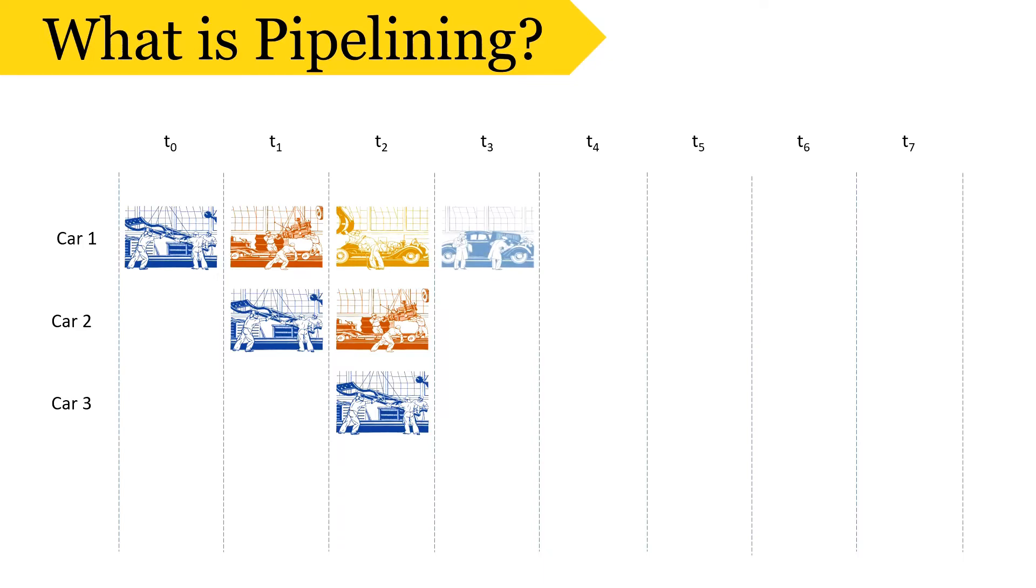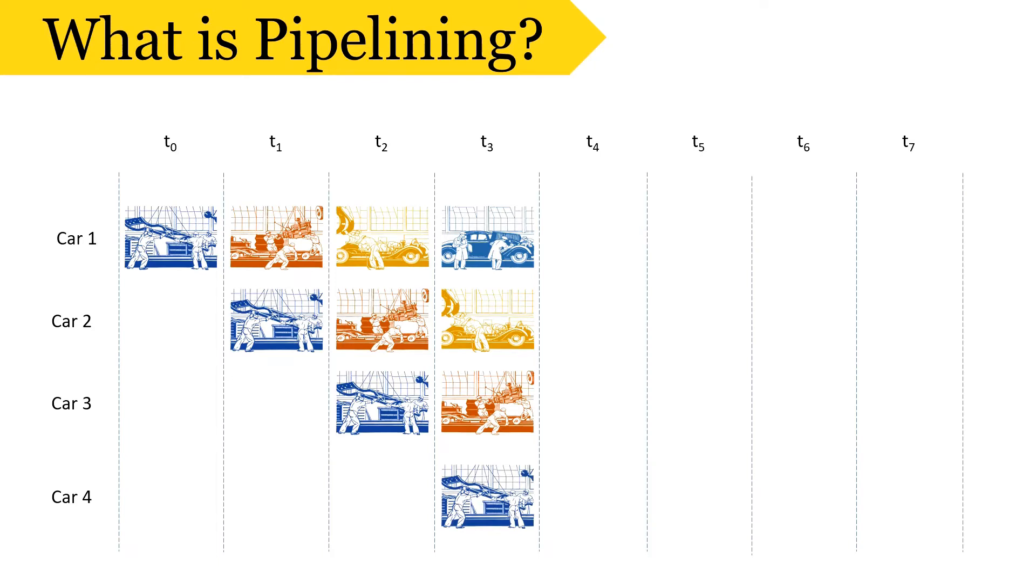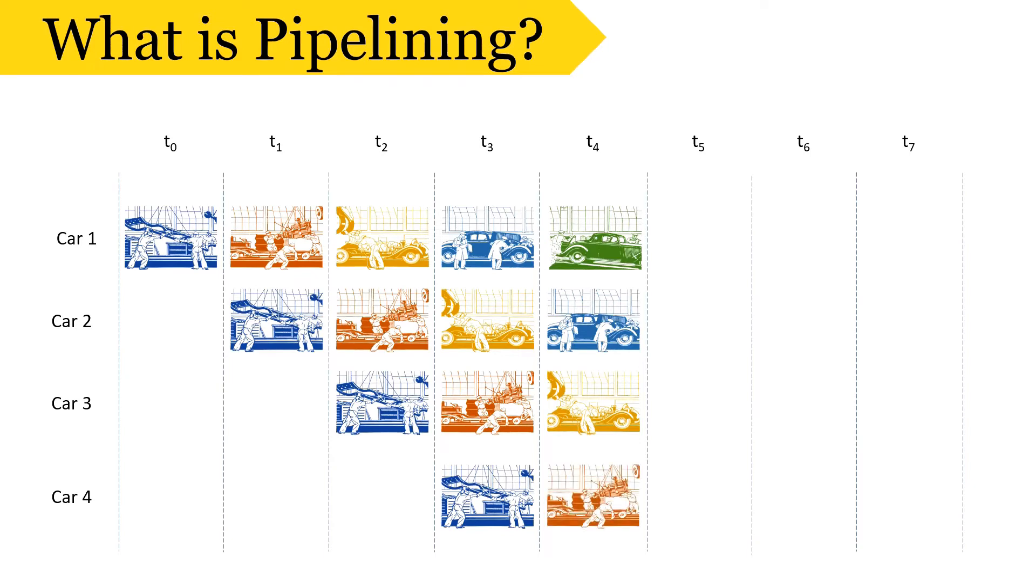At time T3, group 4 will paint the body of car 1, group 3 will add body to chassis of car 2, group 2 will add engine to chassis of car 3 and group 1 will prepare chassis of car 4. At time T4, group 5 will perform final checkup of car 1, group 4 will paint body of car 2, group 3 will add body to car 3 and group 2 will add engine to chassis of car 4.